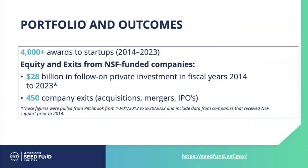A little about the portfolio and outcomes. These figures were pulled from PitchBook, so this is publicly available data. Between the years of 2014 and 2023, we've funded approximately 4,000 companies and have seen many equity and exits from NSF-funded companies, including approximately $28 billion in follow-on funding from private investments and approximately 450 company exits, whether it's acquisitions, mergers, or IPOs.